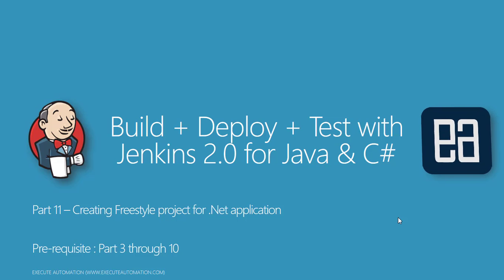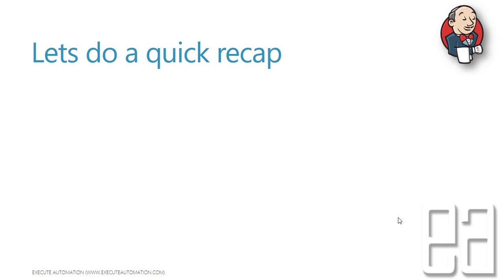This part is a complete continuation of those parts. We have already discussed creating a freestyle project for a Java application in our previous videos, but this is the first time we are going to talk about a .NET application freestyle project for Jenkins. This is really important because right now there is cross-platform and cross-programming-language dependency happening across organizations, and not just one language is going to work out.